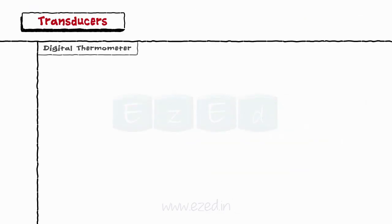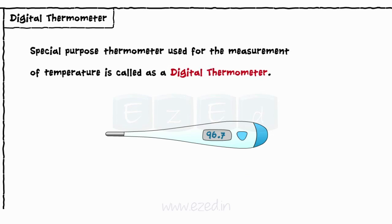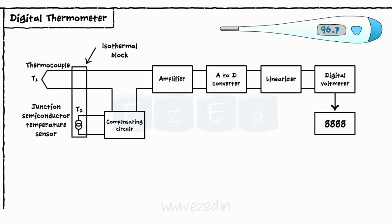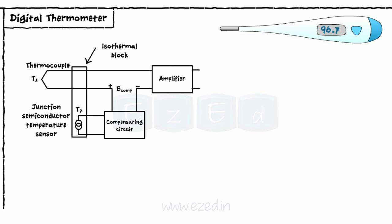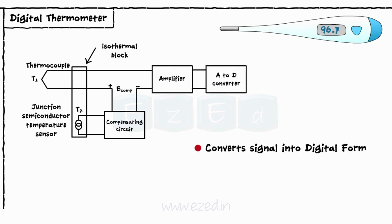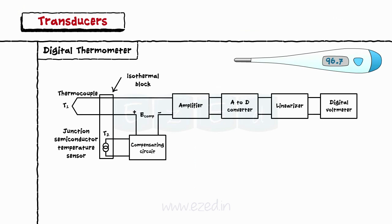The last thing we will study is a digital thermometer. A special purpose thermometer used for the measurement of temperature is called a digital thermometer. The block diagram uses a thermocouple with two measuring junctions T1 and T2. Wires from junction T1 are screwed directly to an isothermal block terminal strip. The temperature T2 of this block is measured by a sensor and applied to the compensating circuit. The compensating circuit produces a voltage added to the thermocouple output, proportional to temperature T1. This compensated voltage in millivolts is amplified, then passed to an A to D converter which converts it into digital form. This digital voltage is linearized by a linearizer and applied to a digital voltmeter which gives a direct digital display of temperature T1.